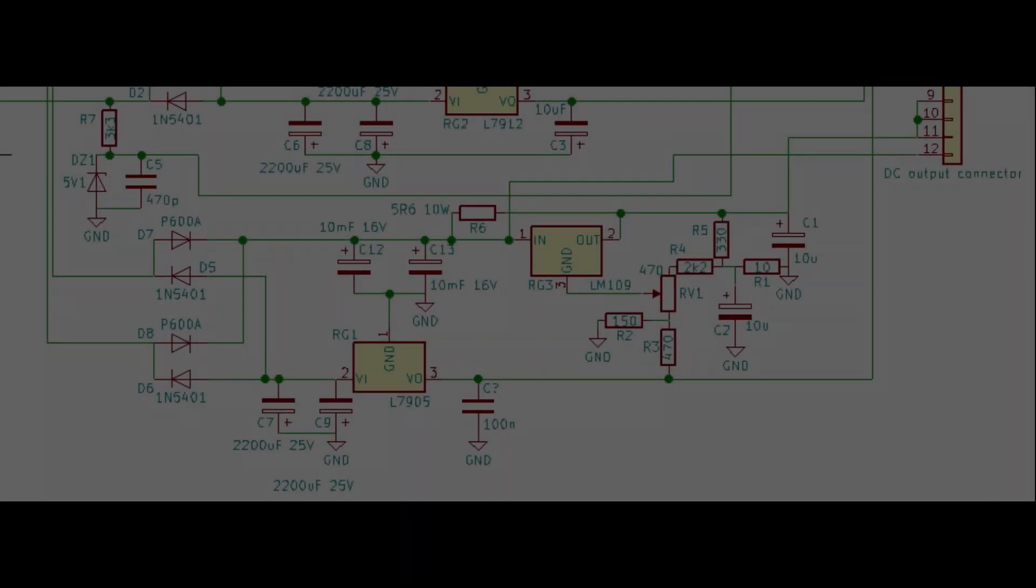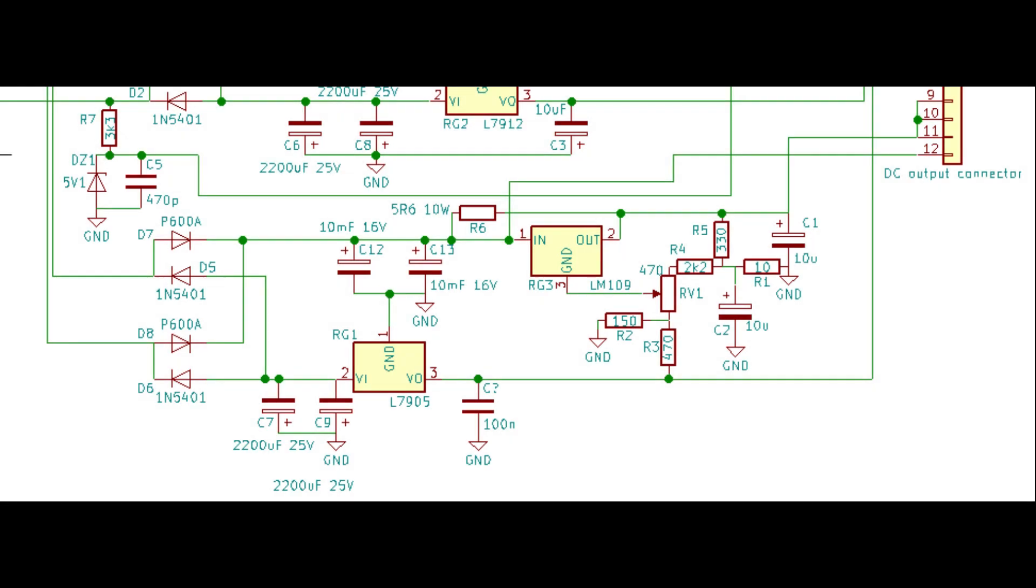The 10V AC secondary is also rectified and smoothed to obtain two opposite polarity unregulated DC rails. However, the positive rail is rectified using 6A diodes. The negative DC rail is then regulated to minus 5V with a 7905 1A regulator.